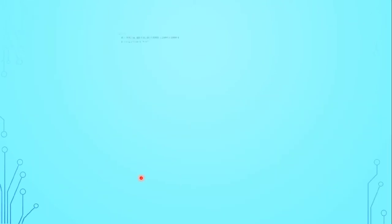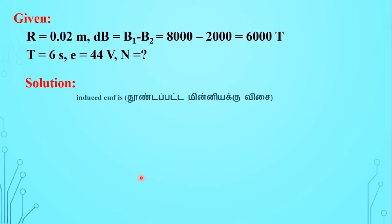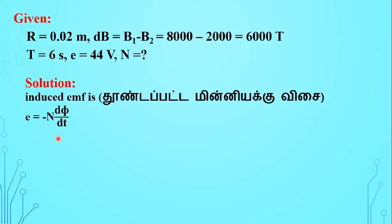Now see the solution. The induced emf of this equation is equal to minus N dΦ by dt, and then Φ is equal to B A cos θ. Here cos θ is equal to 1.